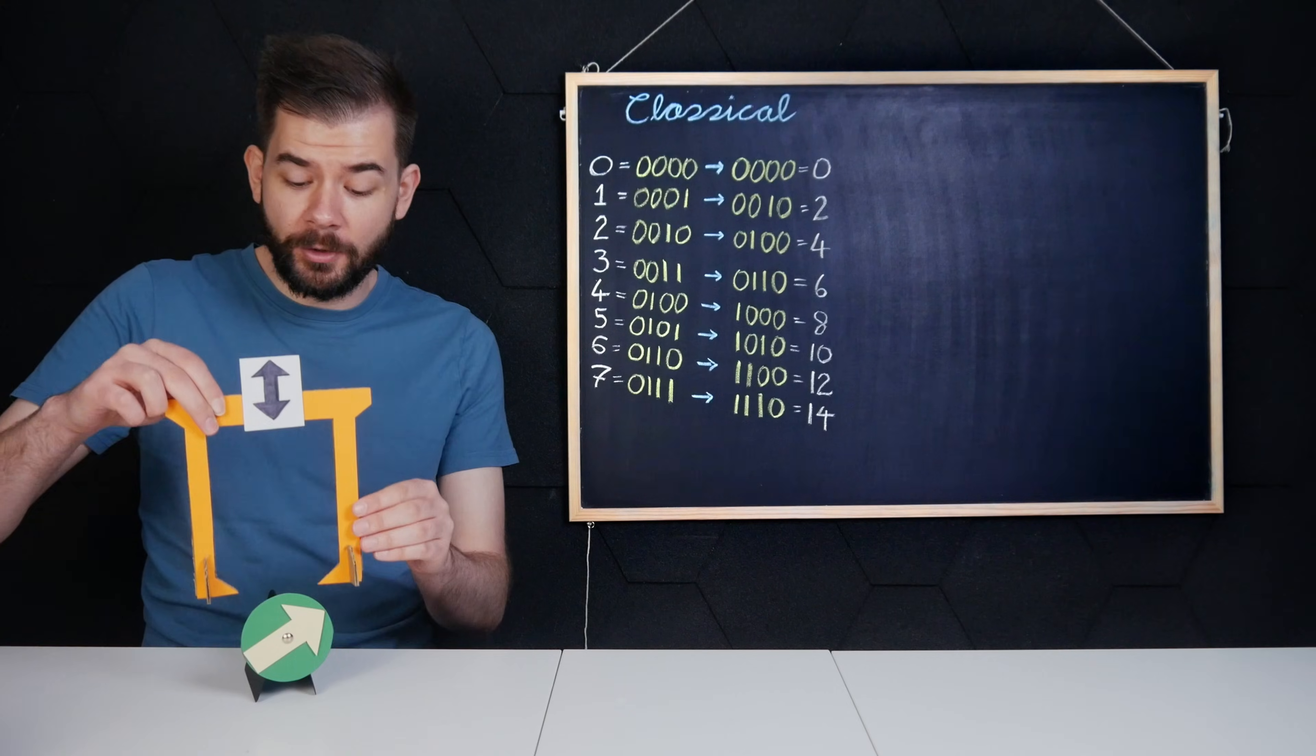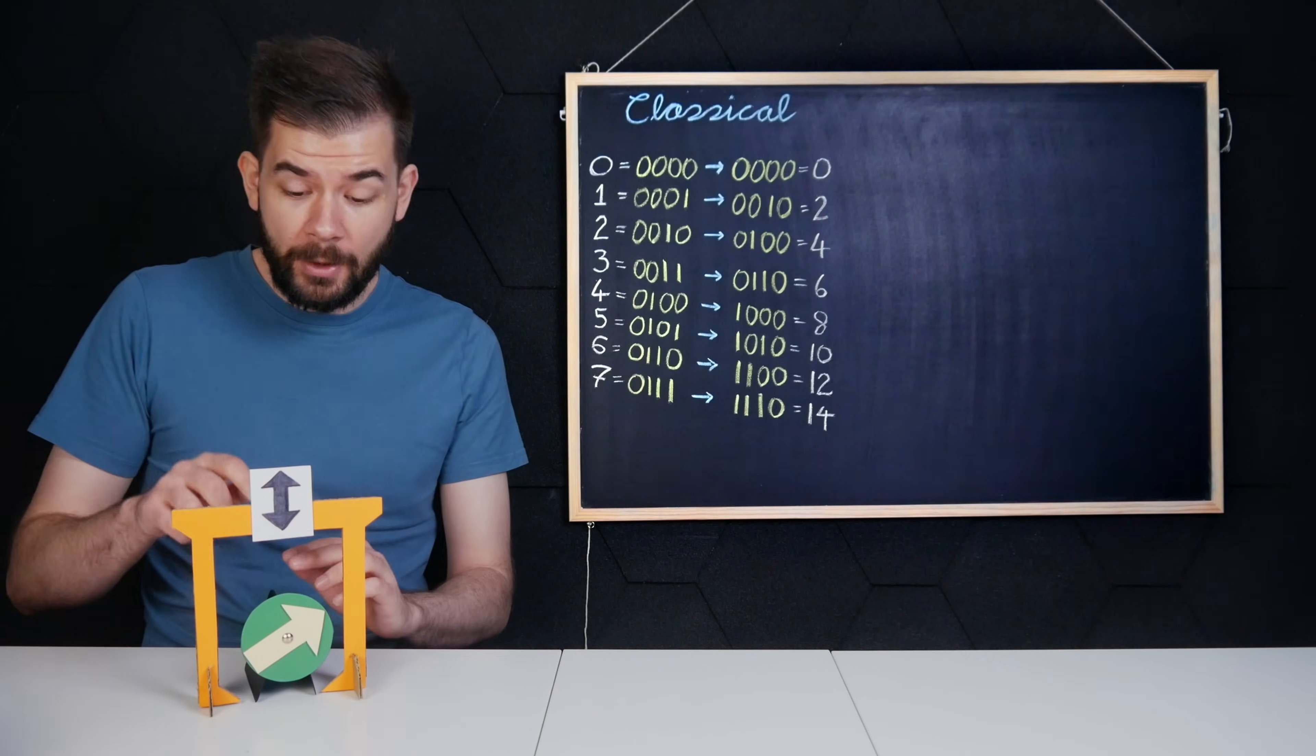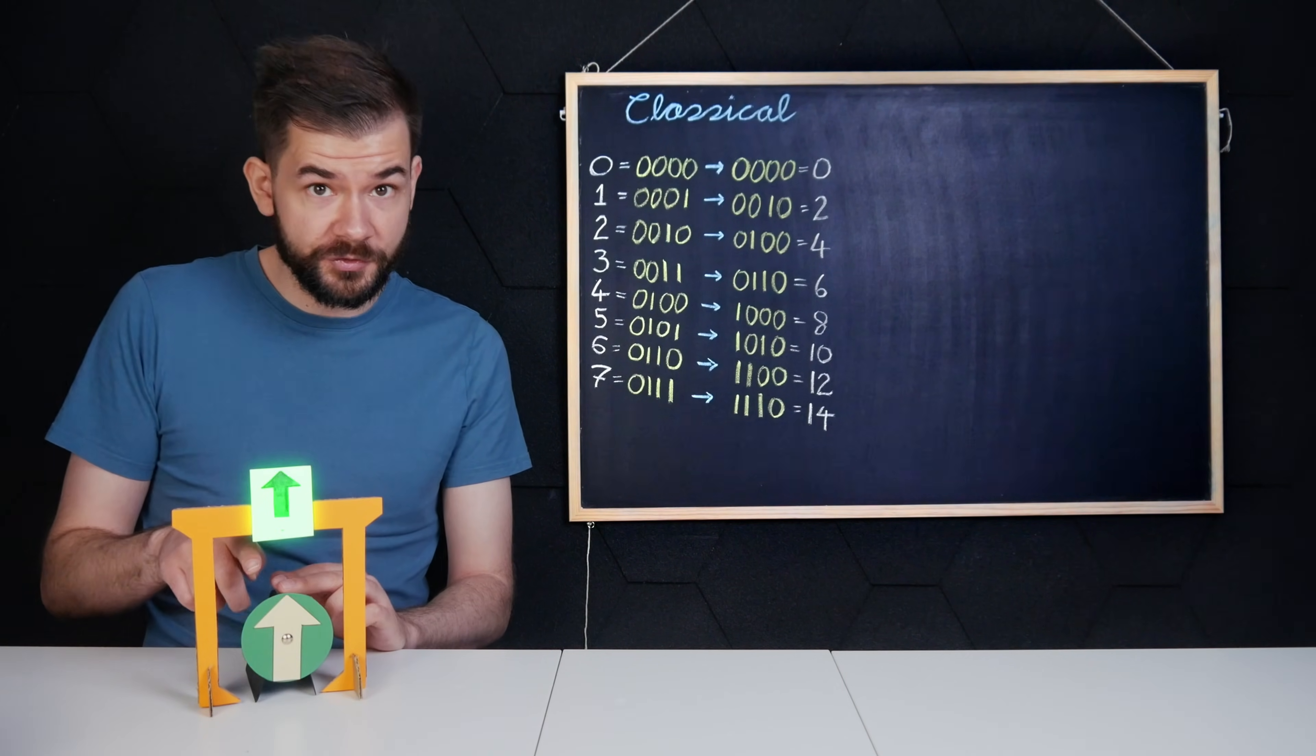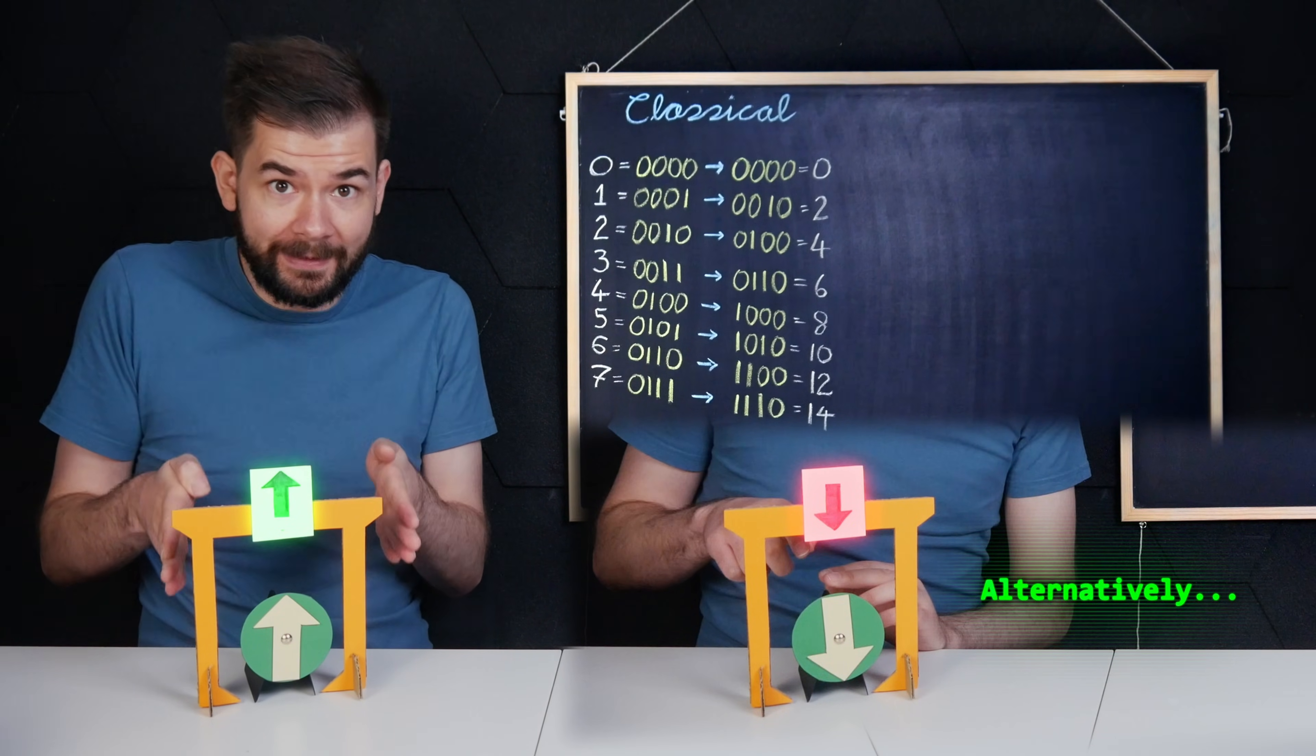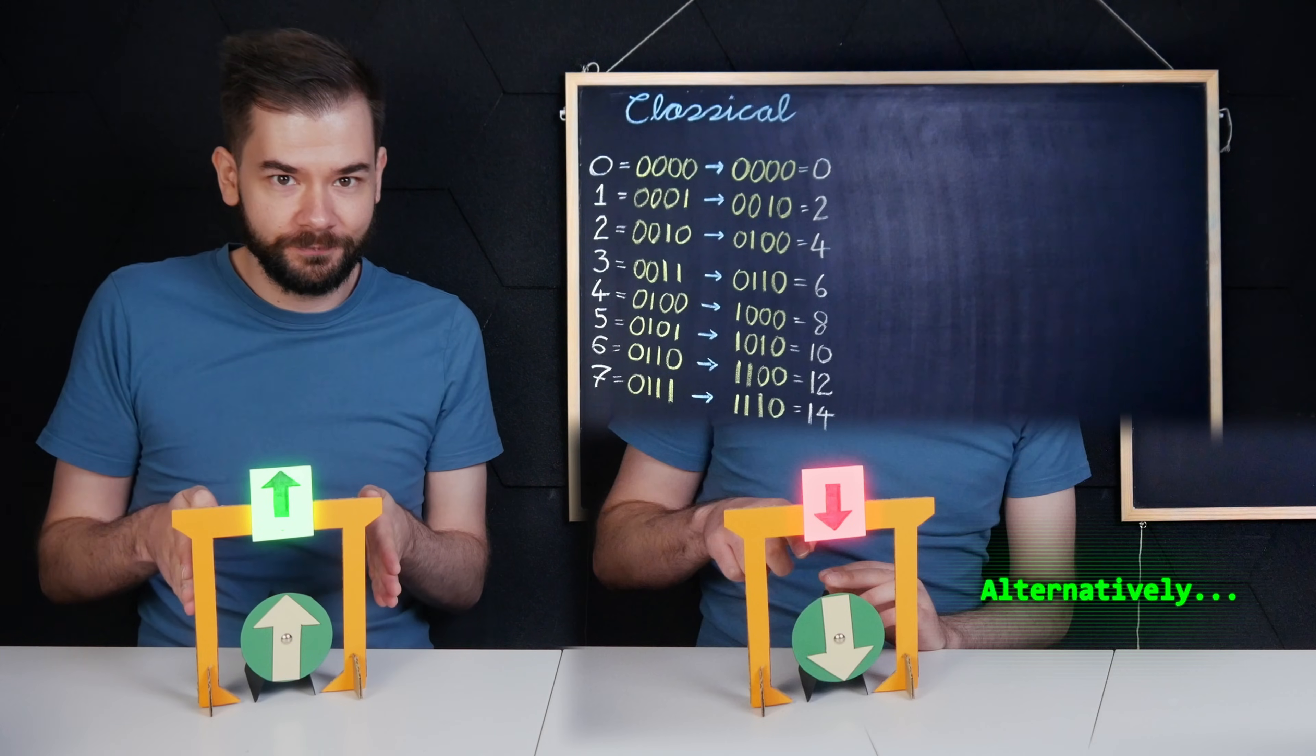But if I apply a spin-up or spin-down gate, it will return spin-up or spin-down, and the act of measuring a certain spin will force the electron into that spin.